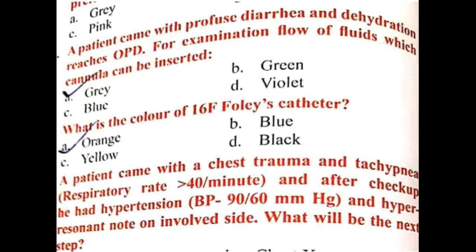A patient comes with profuse diarrhea and dehydration. Which cannula do you use for flow of fluids? For rapid fluid resuscitation and rehydration, we use the gray cannula. Gray cannula is preferred for rapid fluid resuscitation in a patient requiring rehydration.